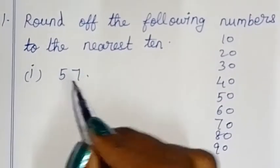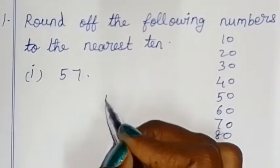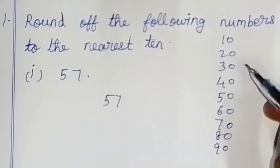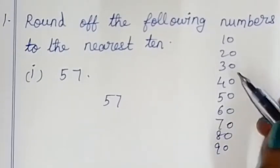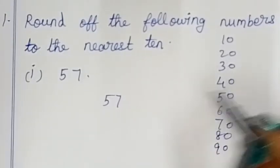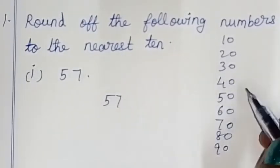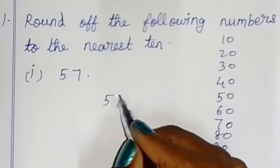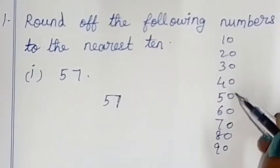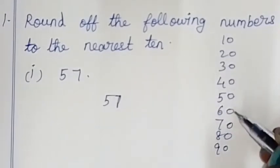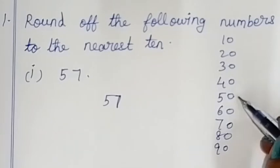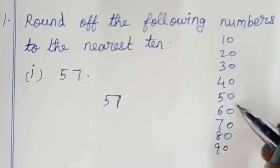What are we going to do? 57 — what are the 10s? In the 10s form, what are the 10s? So 57 sits between 50 and 60. Counting from 50: 51, 52, 53 ... 57 is closer to 50.